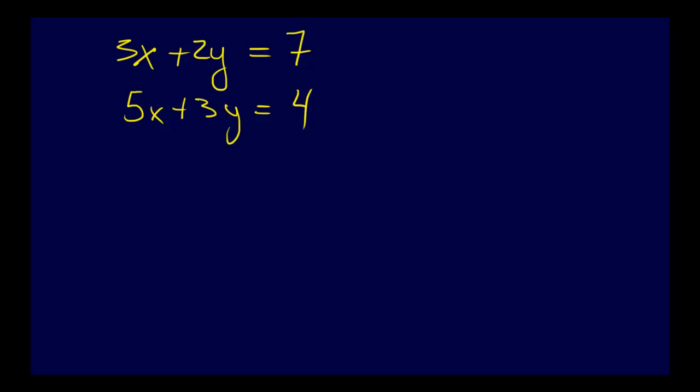So here's a simple set of two equations, and these two equations, 3x plus 2y equals 7 and 5x plus 3y equals 4, are pretty typical of a set of equations that we would come up with.